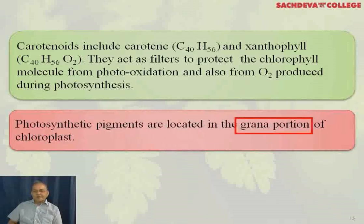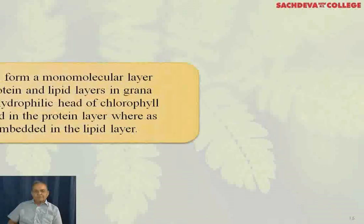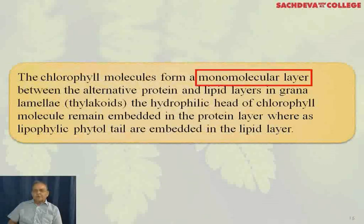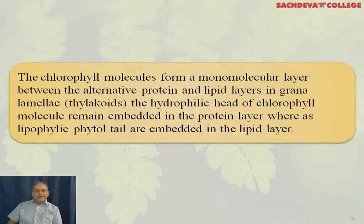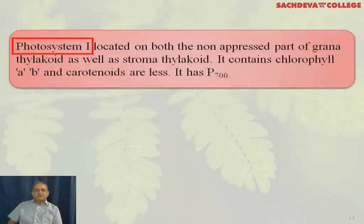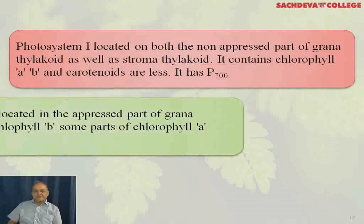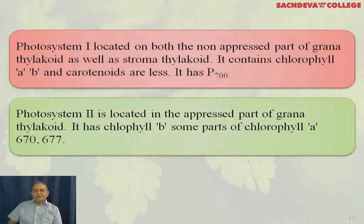Photosynthetic pigments are located in the grana portion of the chloroplast. The chlorophyll molecules form a monomolecular layer between alternating protein and lipid layers in the grana thylakoids. The hydrophilic head of the chlorophyll molecule remains embedded in the protein layer, whereas the lipophilic phytol tail is embedded in the lipid layer. Photosystem I is located on both the non-appressed part of grana thylakoids as well as stroma thylakoids, containing chlorophyll A, B, and carotenoids, with P700.